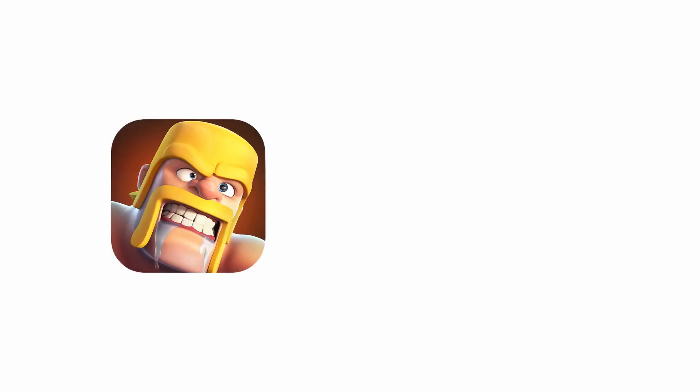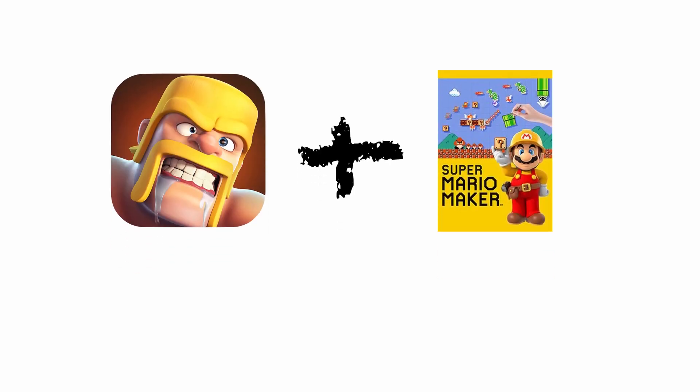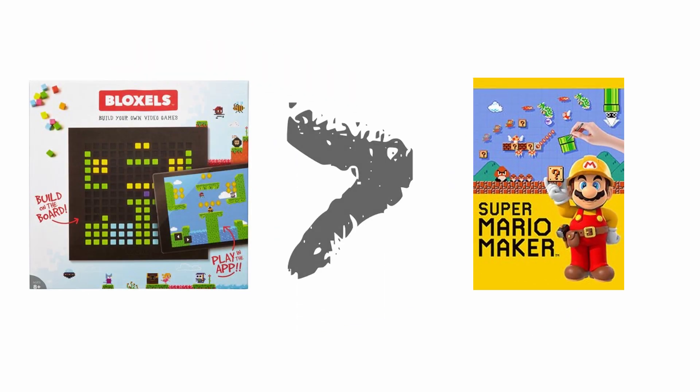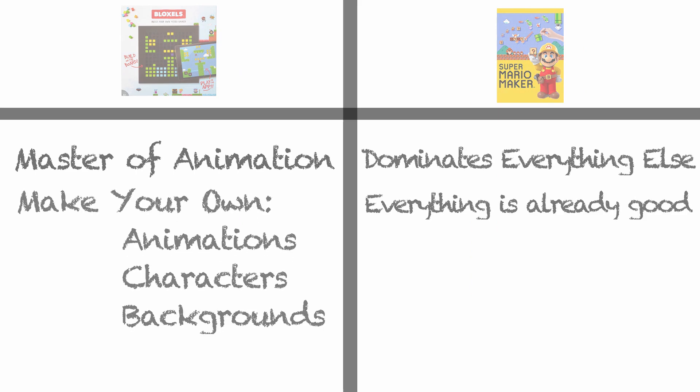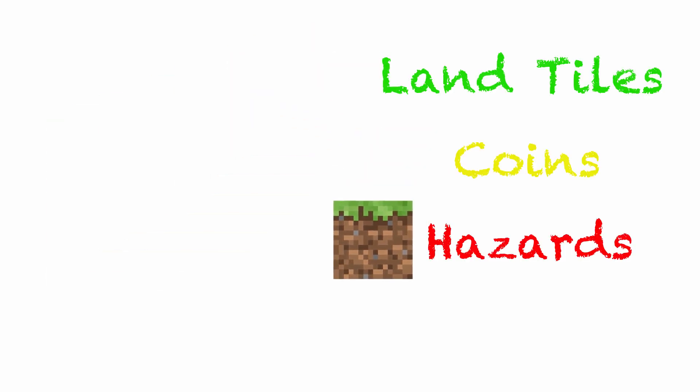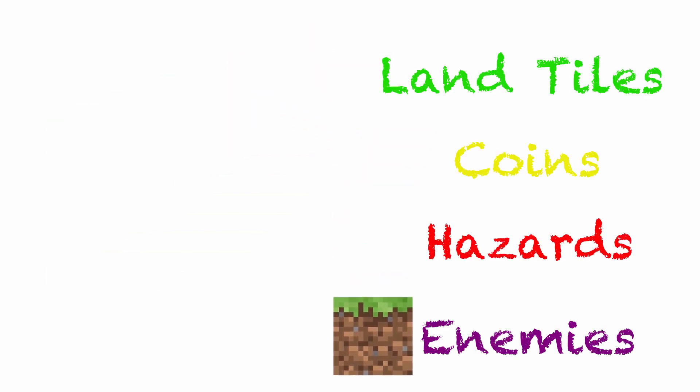Bloxels is this free app that lets you build your own video games using a 13-bit system. It's kind of like Mario Maker, but you can do a whole lot more stuff with it, in terms of animation and visual effects. You can make your own animations, characters, backgrounds, everything can be custom-made. Then you can put boards and animations into land tiles, coins, hazards, and what we are going to focus on today, enemies.